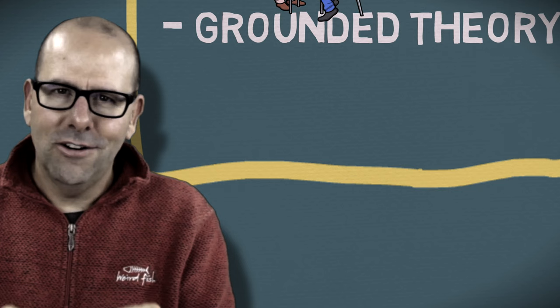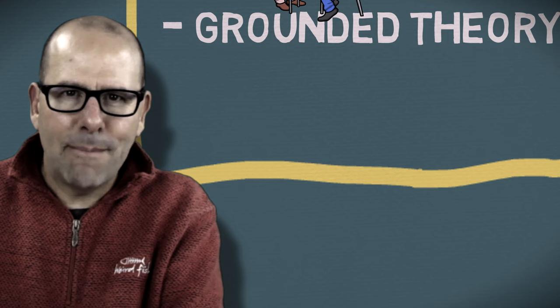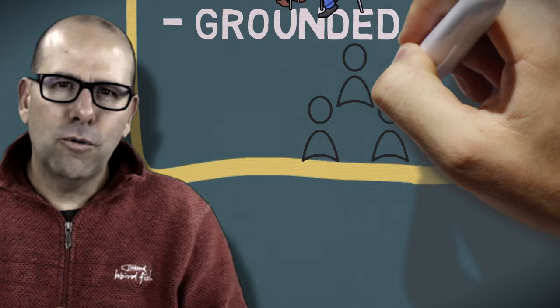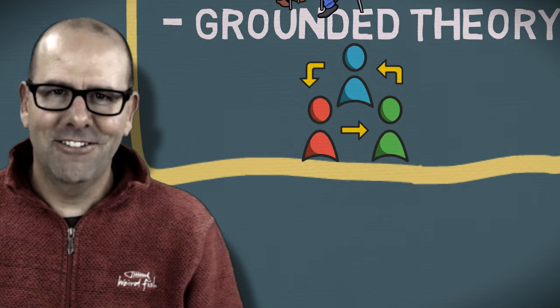Grounded theory is a little different in that the output of your research is a theory — a generalizable or abstract theory about how the world works — and that theory is meant to be grounded in your data, usually the opinions and thoughts of your research subjects. For example, you might want to interview people to develop a general theory about how people react in a crisis.